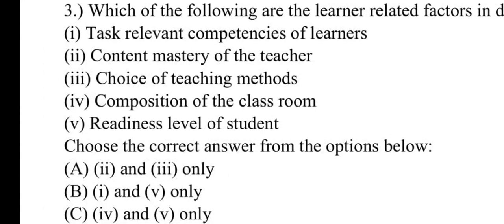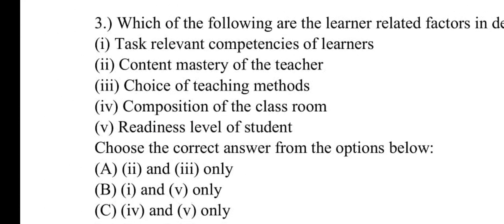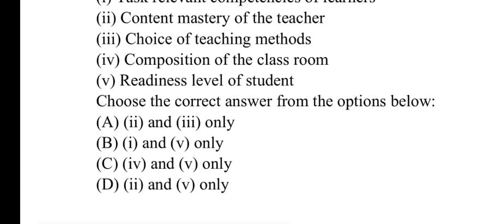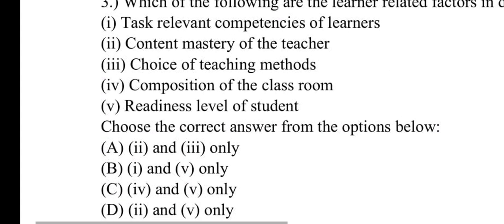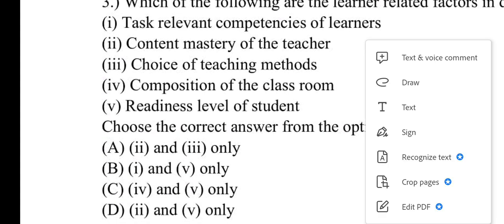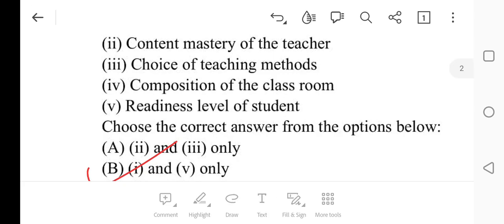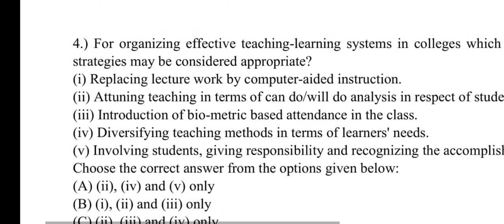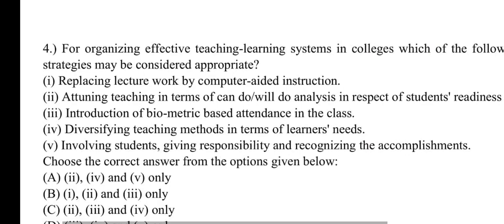Number three: Which of the following are the learner-related factors in determining effectiveness of teaching? The options include task-relevant competencies of learners, content mastery of the teacher, choice of teaching methods, composition of the classroom, and readiness level of student. Number B will be correct: 1 and 5 only.